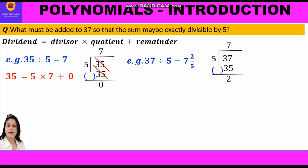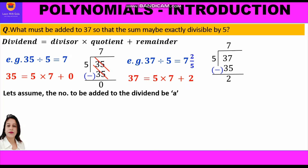Now, when we divide 37 by 5, we get remainder 2, since 5 × 7 = 35 and 37 - 35 = 2. Putting values in the division algorithm: 37 = 5 × 7 + 2. Since 2 is the remainder, 37 is not exactly divisible by 5, and we need to add some term to make it exactly divisible.